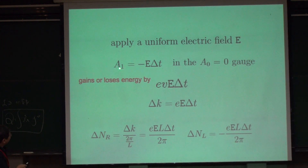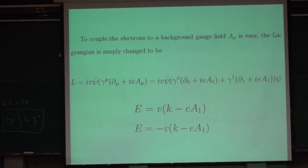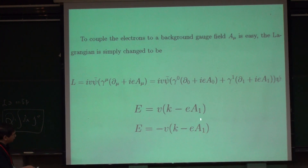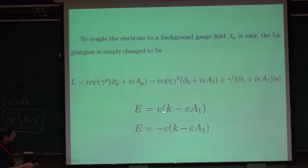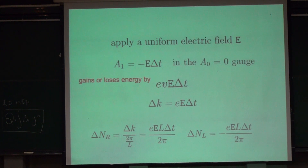So if you change A1 by this much, then the left branch and right branch — the left-moving particle and right-moving particle — their energies will also be changed. And the energy change will be VF times delta A, which becomes VF times E times delta T.